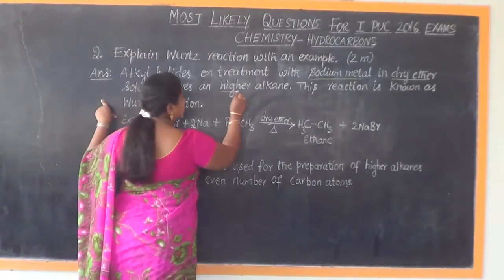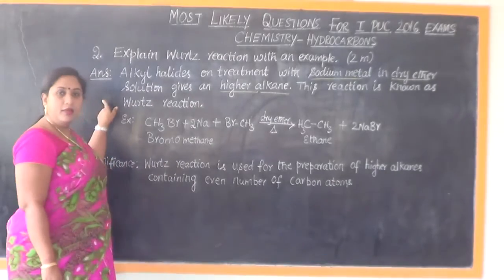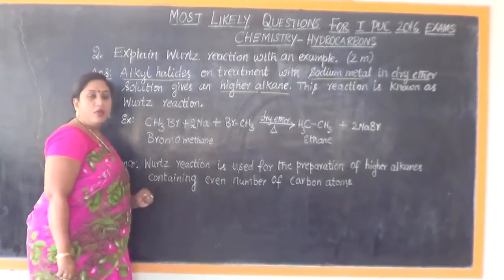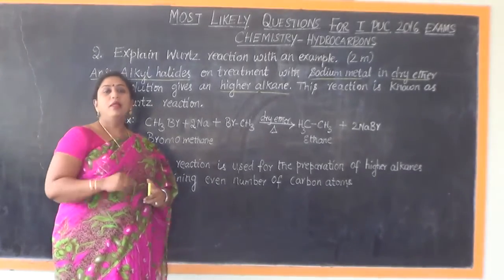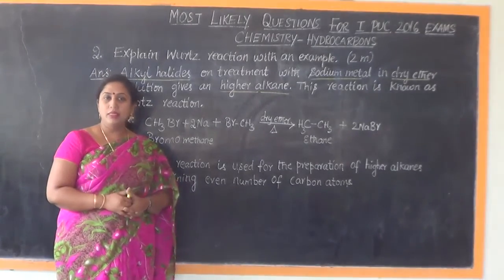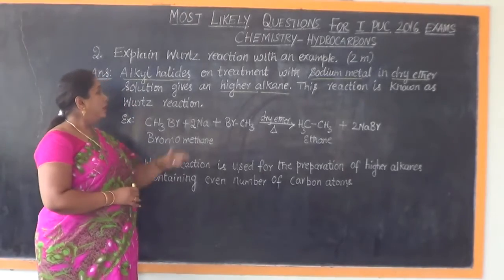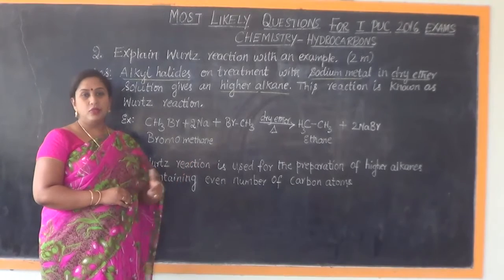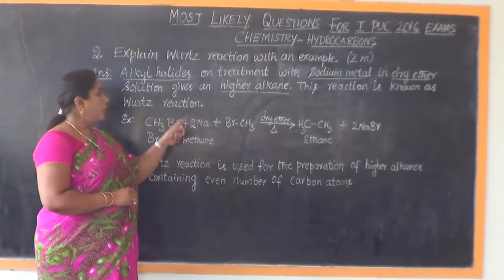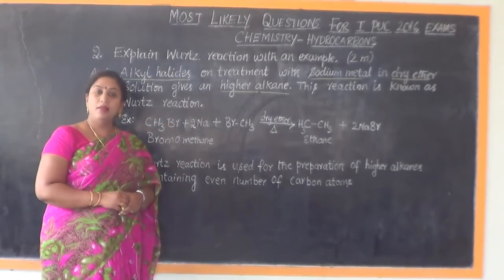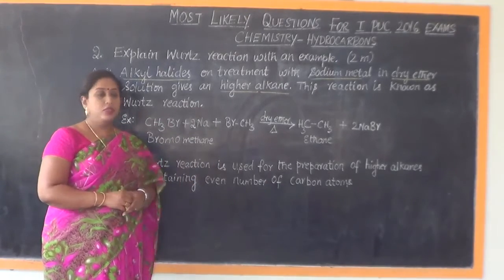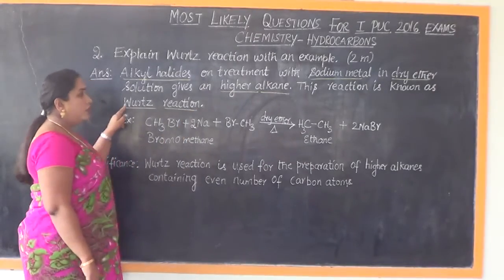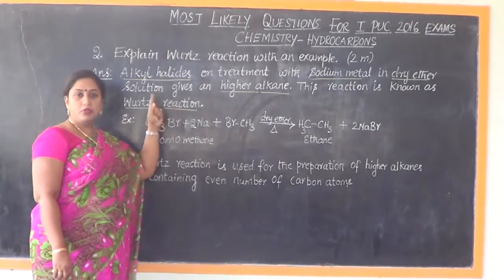When alkyl halides are treated with sodium metal in presence of dry ether, the result is the formation of a higher alkane. Alkyl halides — also called haloalkanes — require two similar molecules to be considered. It is this reaction that we call by the name Wurtz reaction. So we have explained what Wurtz reaction is.